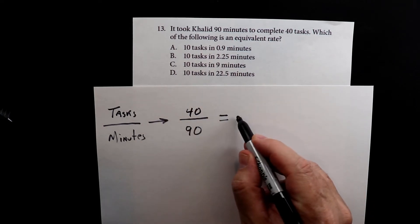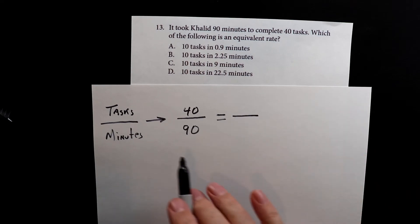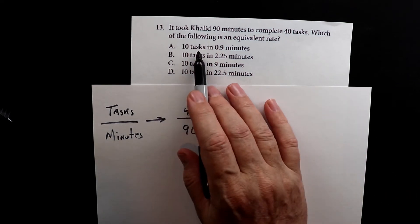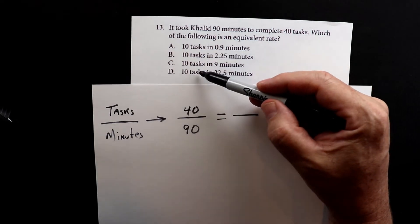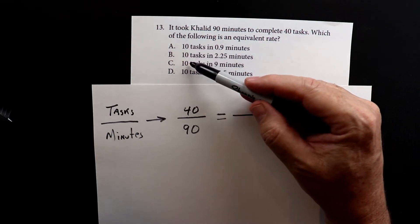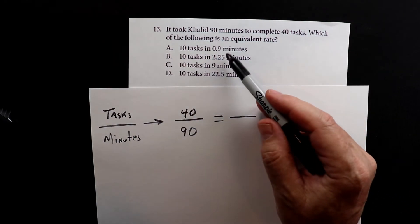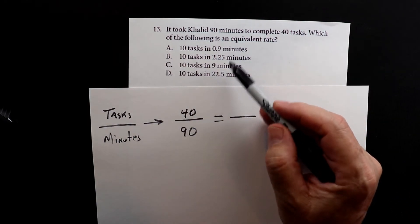For this one, what we're doing is we're setting it up. We have tasks on the left and minutes on the right. Now, if you notice, every one of the tasks are the same: 10, 10, 10 and 10. But on the right hand side, the minutes differ.